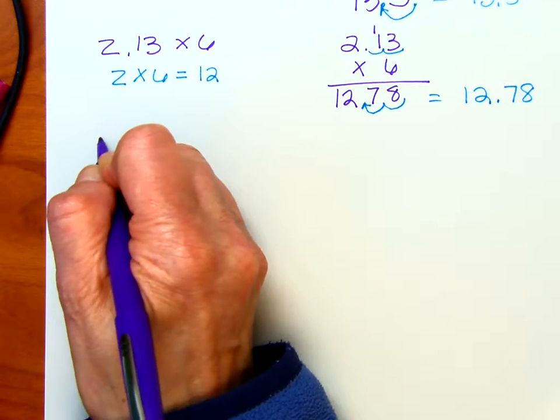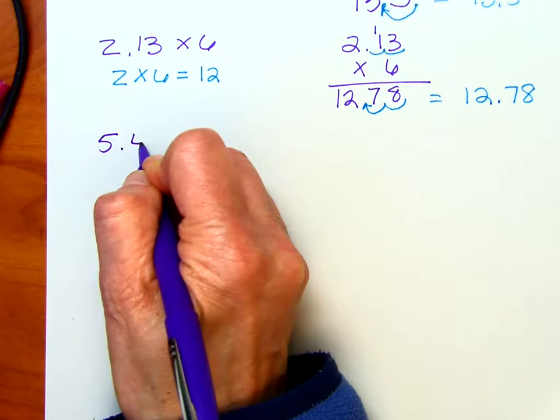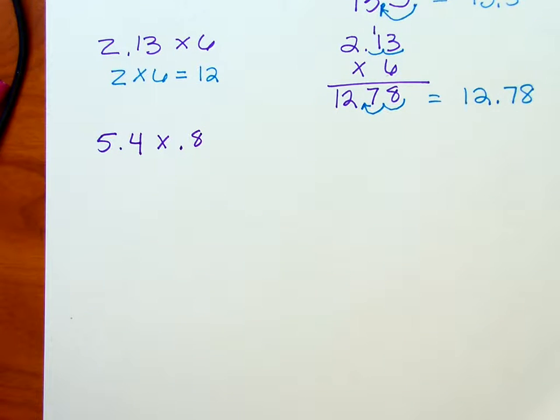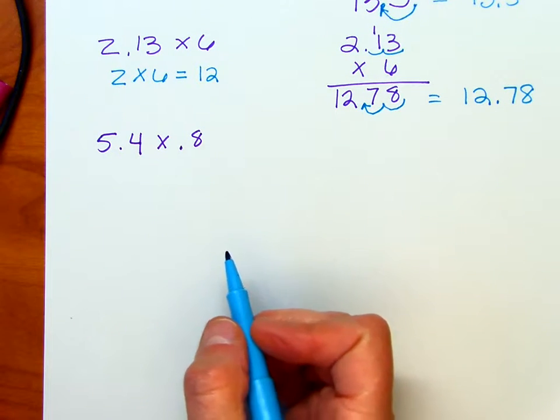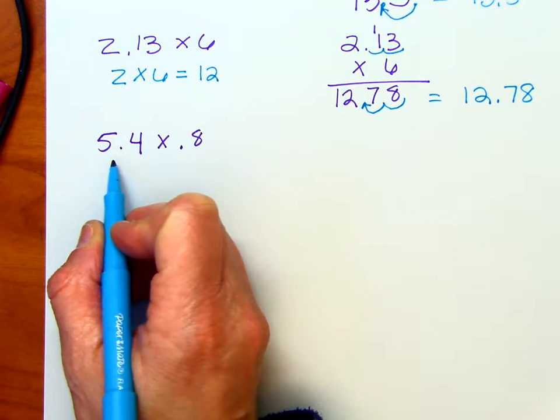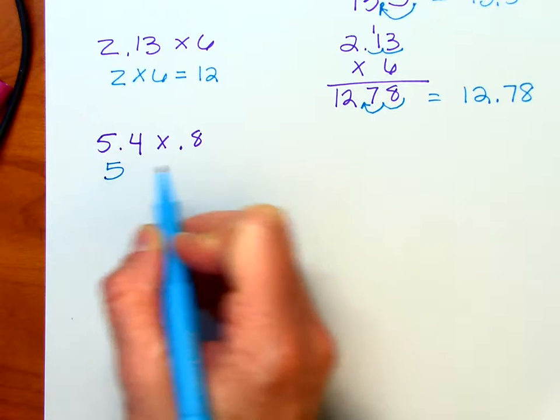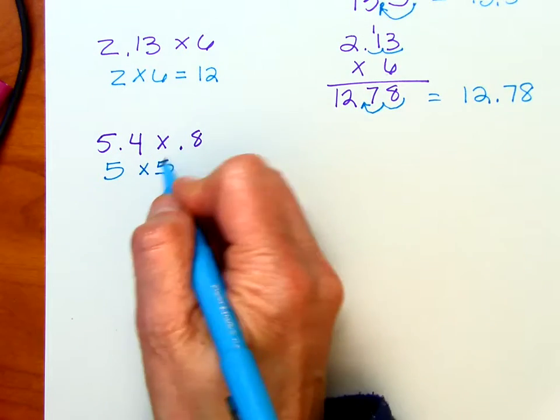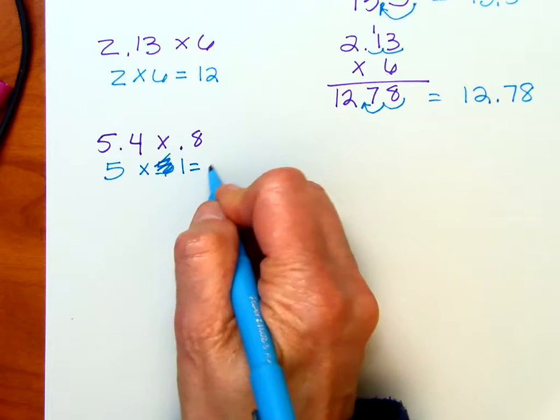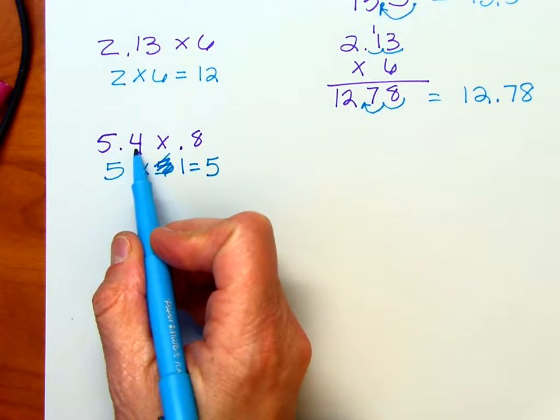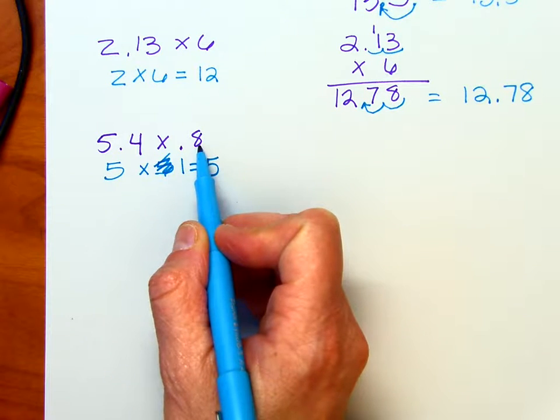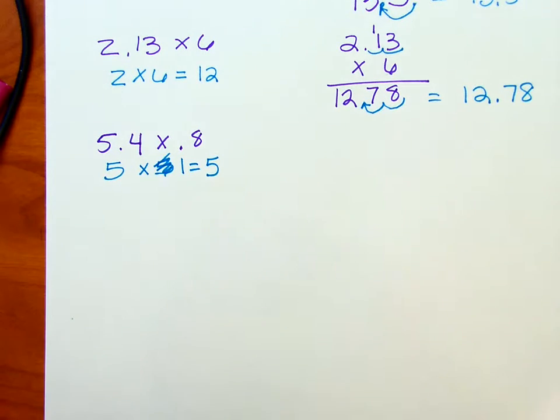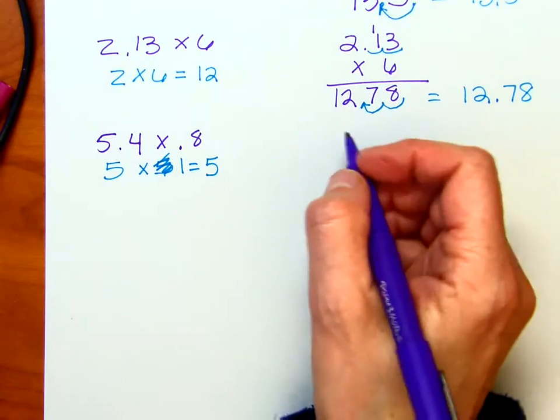In this problem, we're going to have a decimal point in each factor. 5.4 times 0.8. I'm going to go ahead and do some estimating again. I'm going to round to the nearest whole number. In this case, I'm going to round down to 5. And this 0.8 could be rounded to 1. 5 times 1 should give me 5. Now notice I rounded down to get this 5, and I rounded up to get this 1. So my answer should be pretty close to this 5. Let's go ahead and figure it out.